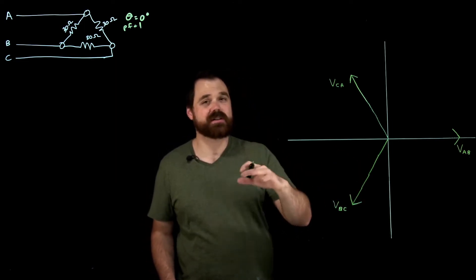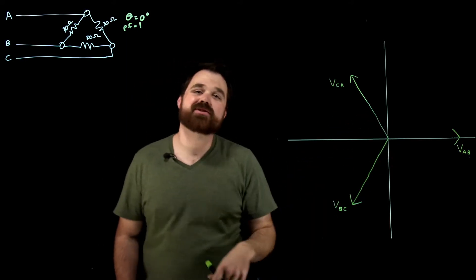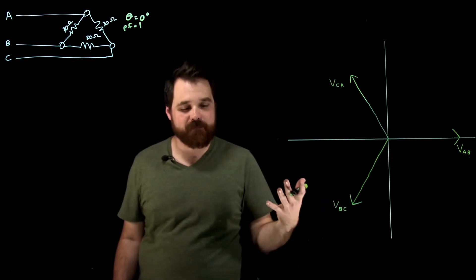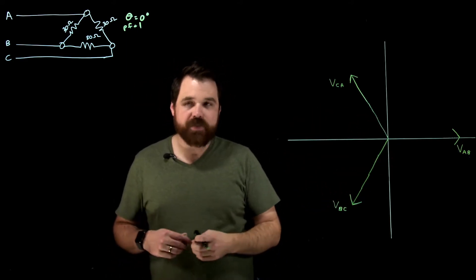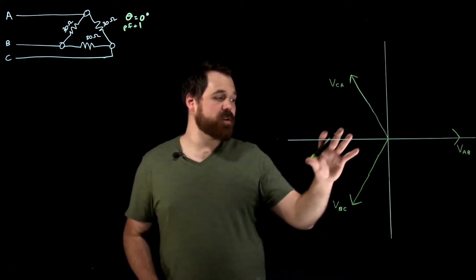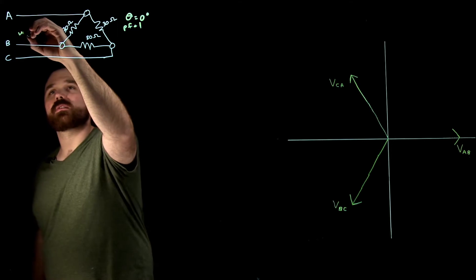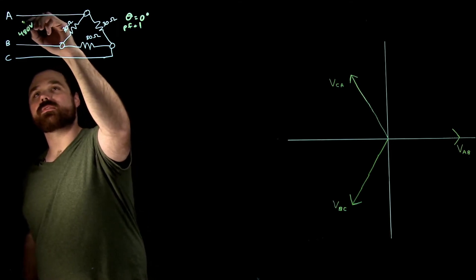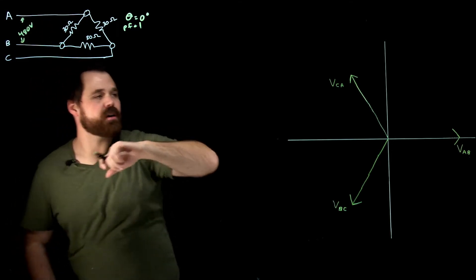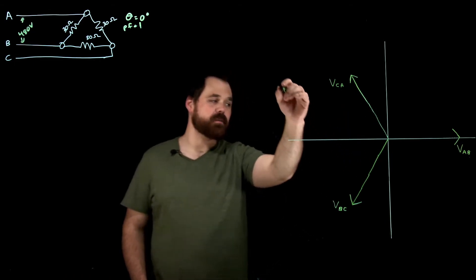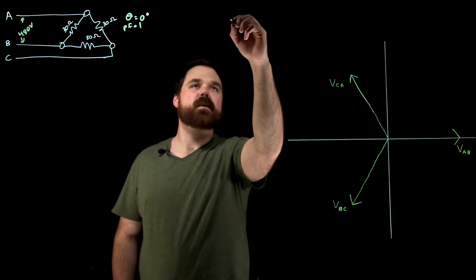We're going to take that information and solve our delta circuit and look at the phaser diagram for that. What I've already done here is I've already plotted my voltage phasers here. We're going to say this is a 480 volt circuit. I have my voltages already plotted and I'm just going to write them up here to save a little bit of space.